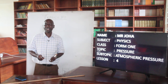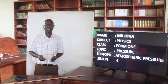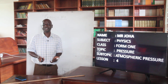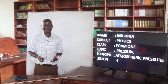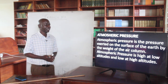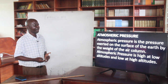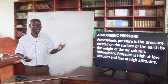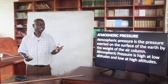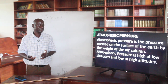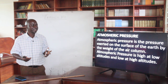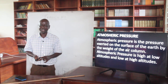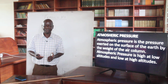We want first of all to define atmospheric pressure and then go ahead and look at the effects of atmospheric pressure. What is atmospheric pressure? Atmospheric pressure is the pressure exerted on the surface of the earth by the weight of a column of air.